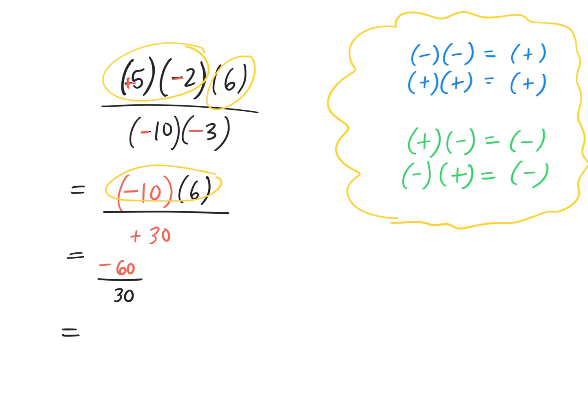Last and final step. Negative divided by a positive gives me a negative. What's 60 divided by 30? 2. Final answer, negative 2.